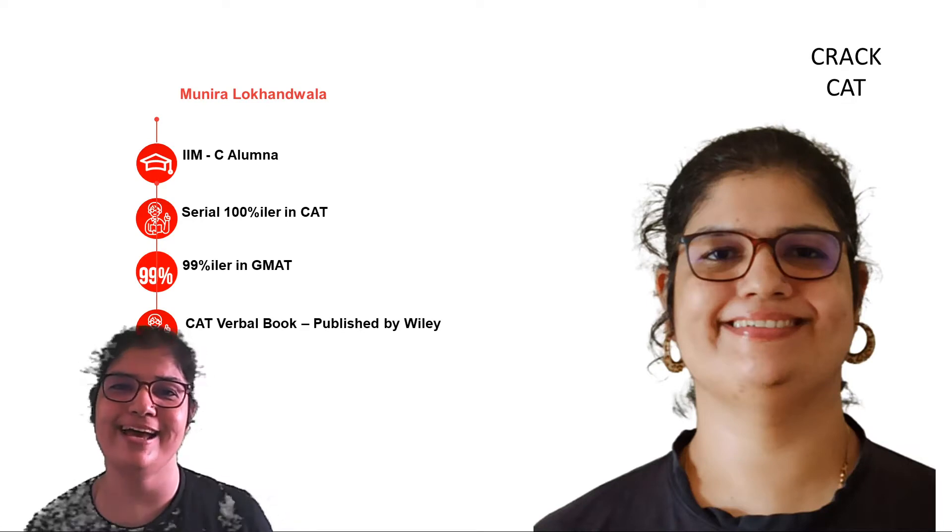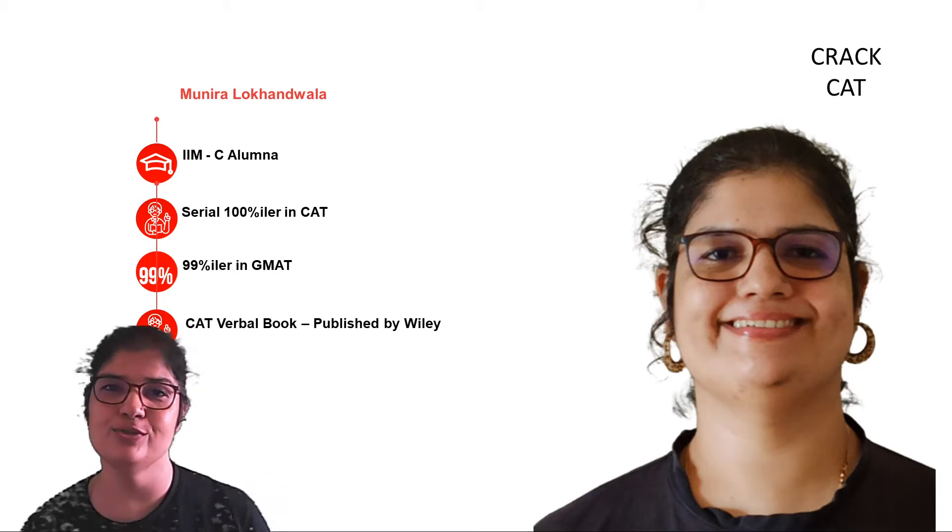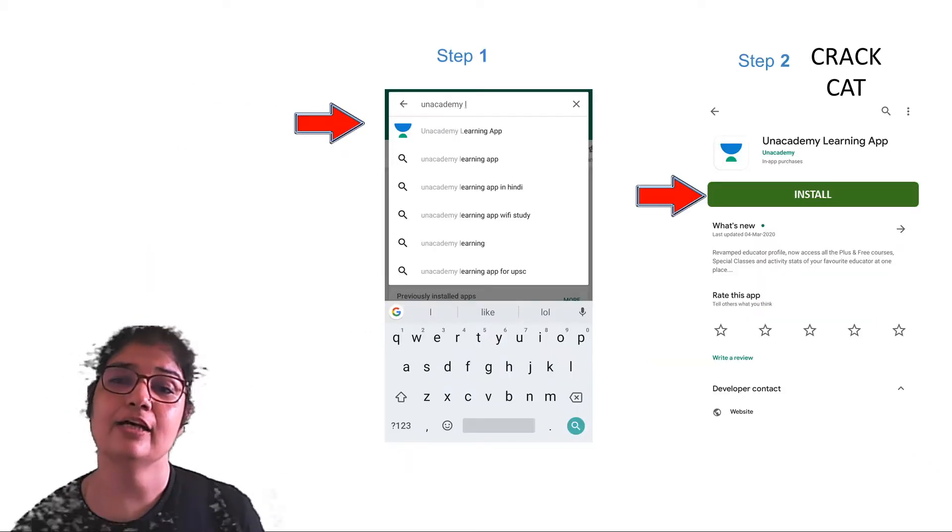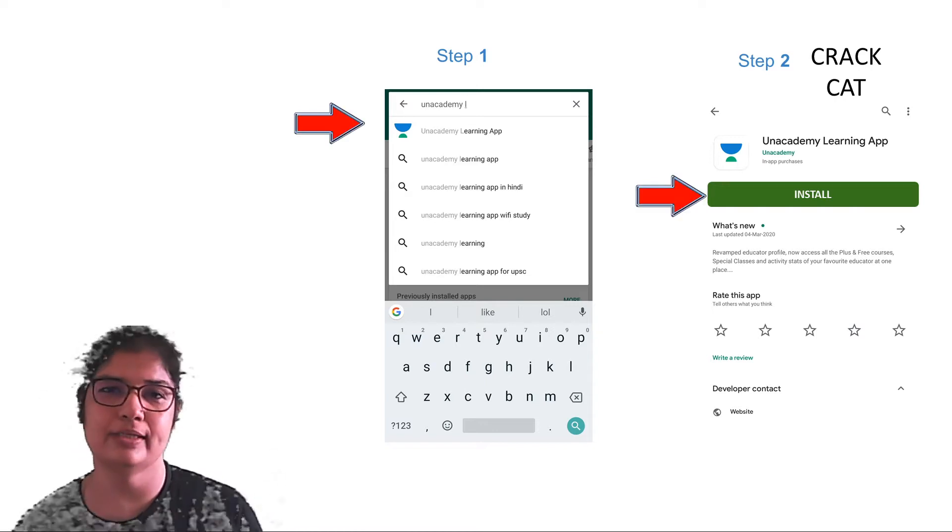Hi, I'm Munira Lokhanwala and I'm a CAT Calcutta alumna, a serial 100 percentile in the CAT and a 99 percentile in the GMAT. I also have a CAT verbal book published by Wiley and available on Amazon. You can see me on the Unacademy YouTube Crack CAT channel. I'm also taking a lot of sessions on the Unacademy app. So Unacademy app, Google Play Store, search for it, download, install it.